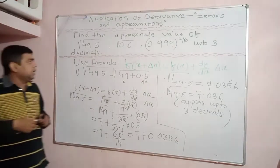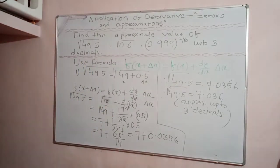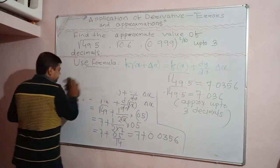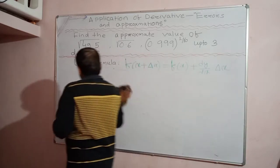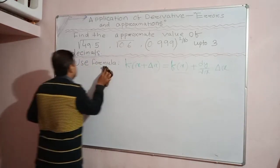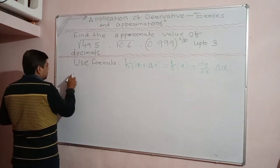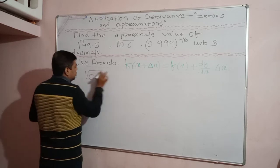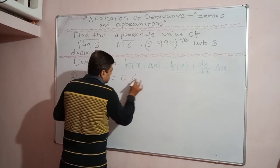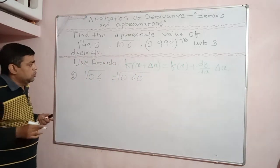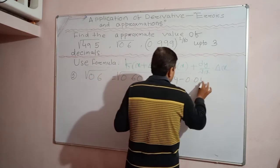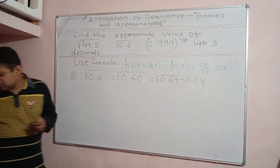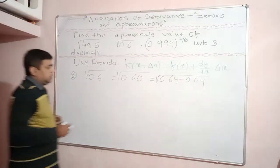Now the second question: find √0.6 up to 3 decimal places. We write 0.6 as 0.64 − 0.04, since 0.64 is a perfect square. So we take x = 0.64 and Δx = −0.04.